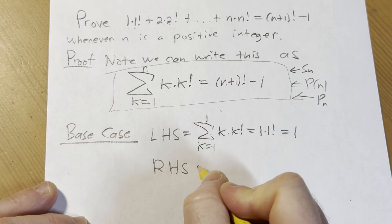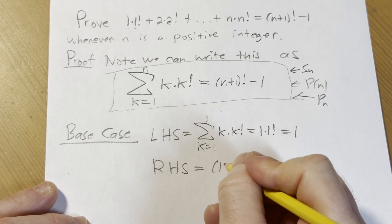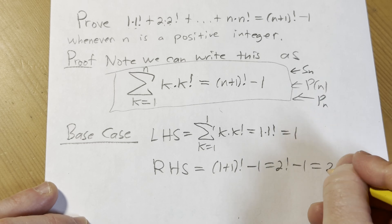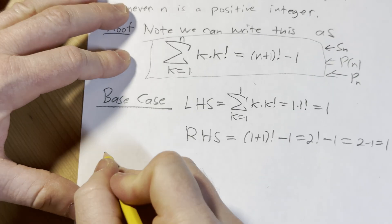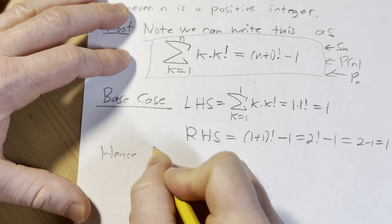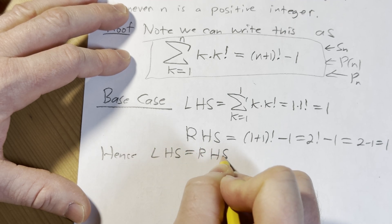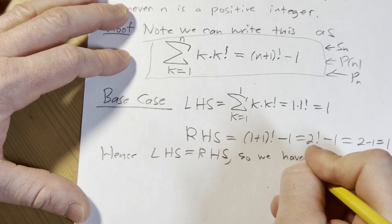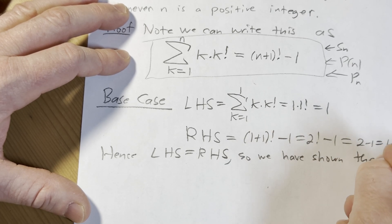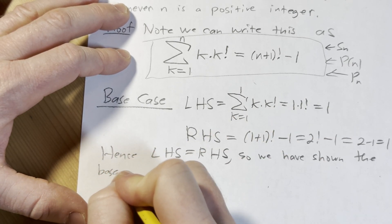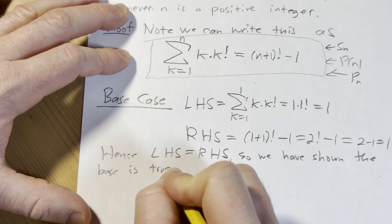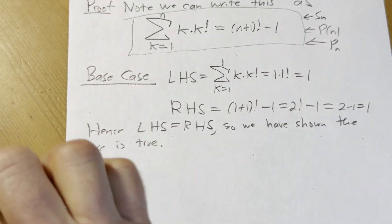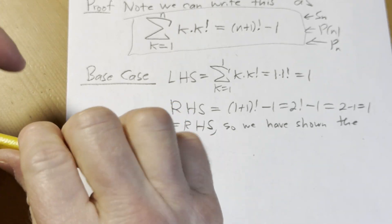The right-hand side, plugging in 1, we get 1 plus 1 factorial, minus 1, we get 2 factorial minus 1. 2 factorial is 2 times 1, which is 2, so you get 1. Hence, the left-hand side is equal to the right-hand side. So we have shown the base case is true. We have shown that it is indeed true. I feel accomplished. The base case is the easiest part.